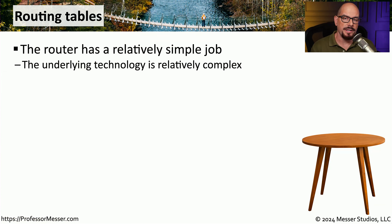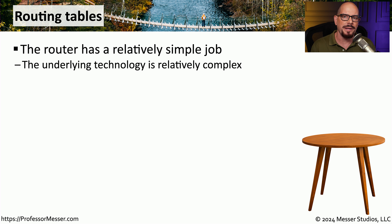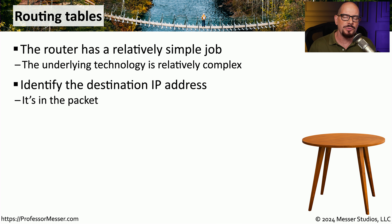The routers that we use in our homes and our offices have an important job of forwarding traffic between one IP subnet and another. It's a relatively straightforward process, although there is a lot of technology under the surface that makes this happen. But if we were to look at this in a very simplified form, we could see that the router is performing a series of relatively simple steps. The first step is to identify what the destination IP address might be for incoming traffic into the router. It looks into the packet, identifies what the destination IP address is, and makes a note of where it should be sending this traffic.